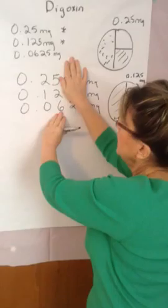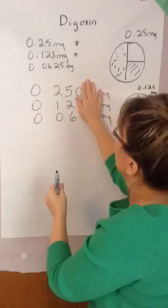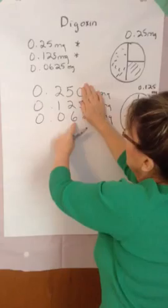Two of these make that. Two of these make this. Two 125s make a 250. It's like double.